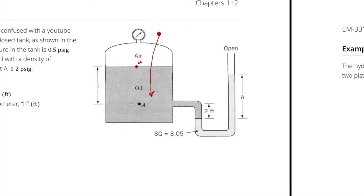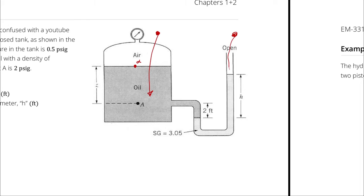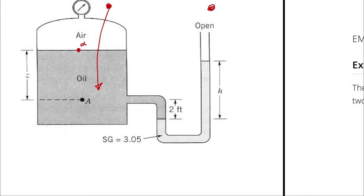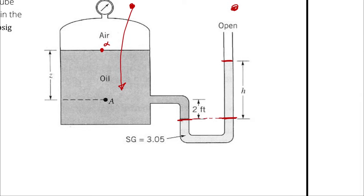Or, we could approach it by working from atmospheric pressure in through the manometer. The thing that gets us from atmospheric pressure down is H, and I can relate the pressure difference between points by using the density of the gauge fluid times gravity times height H. From Pascal's Law, the pressure at the same height is equal, and then I can work from point beta up to A using the density of oil times gravity times two feet of height.